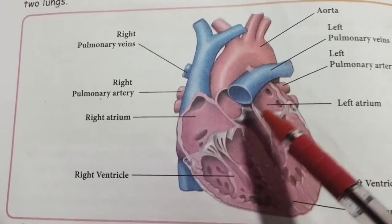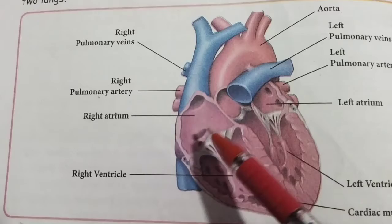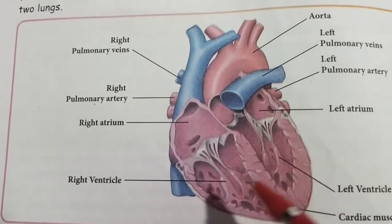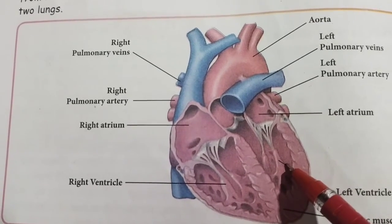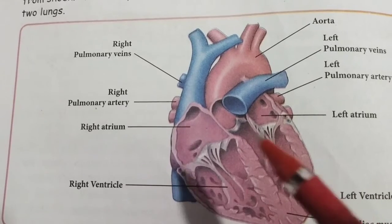The heart is divided into four chambers — two upper chambers and two lower chambers, where chambers means like rooms. The upper chamber is called the atrium: the right side is the right atrium and the left side is the left atrium. The lower chamber is called the ventricle: the right side is the right ventricle and the left side is the left ventricle. So in total, the heart has four chambers.